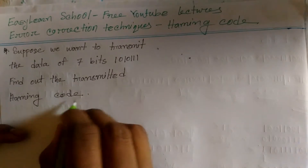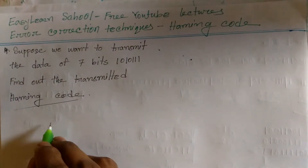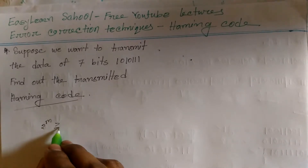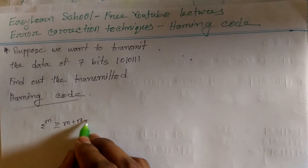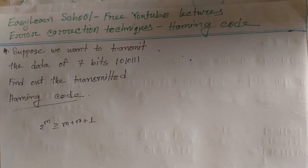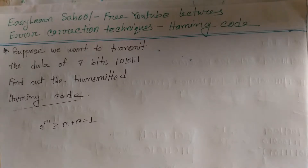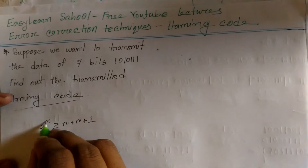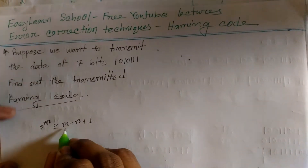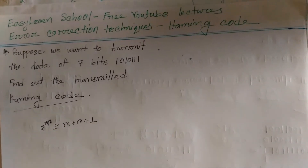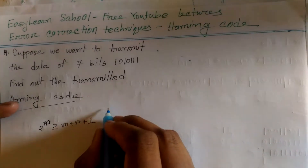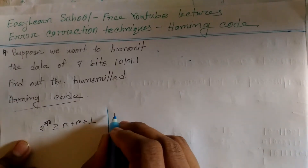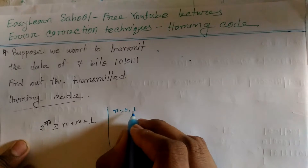This is the equation: 2 to the power r is greater than or equal to m plus r plus 1. This equation states that 2 to the power r must be greater than or equal to m plus r plus 1, where r is the number of redundant bits.